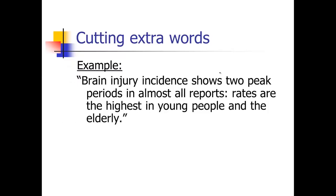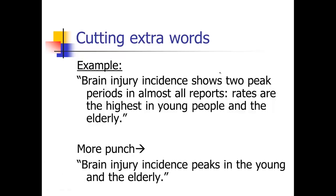So here's an example. Here's a perfectly good sentence. Brain injury incidence shows two peak periods in almost all reports. Rates are the highest in young people and the elderly. But compare that to the following, which has a lot more punch. Brain injury incidence peaks in the young and the elderly. See how much crisper, how much more power that second sentence has when we get rid of all the extra extraneous, unnecessary words.